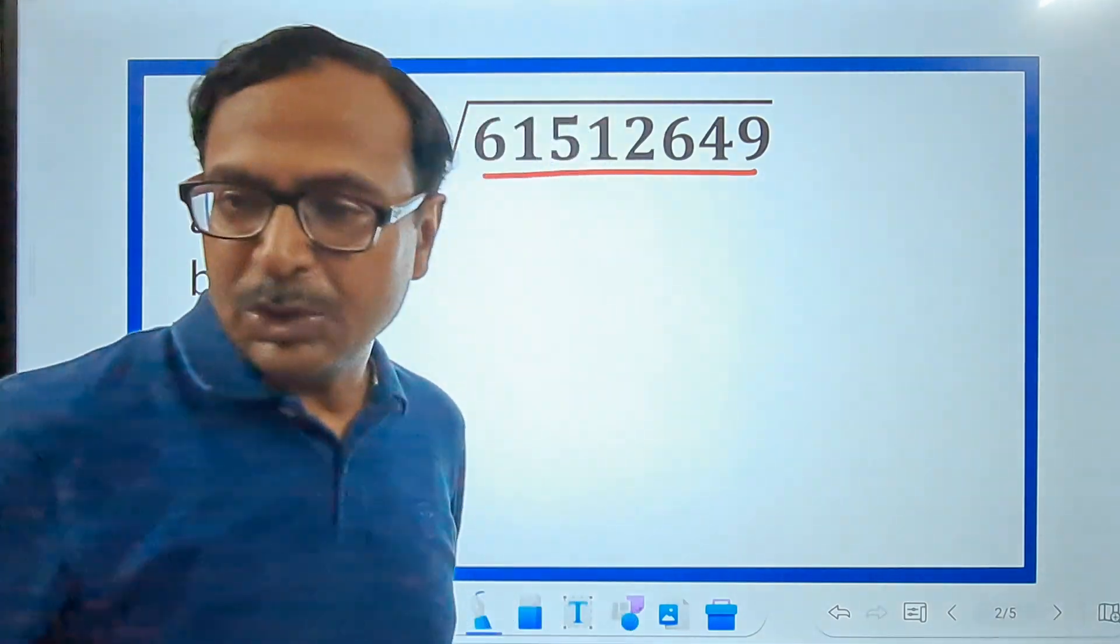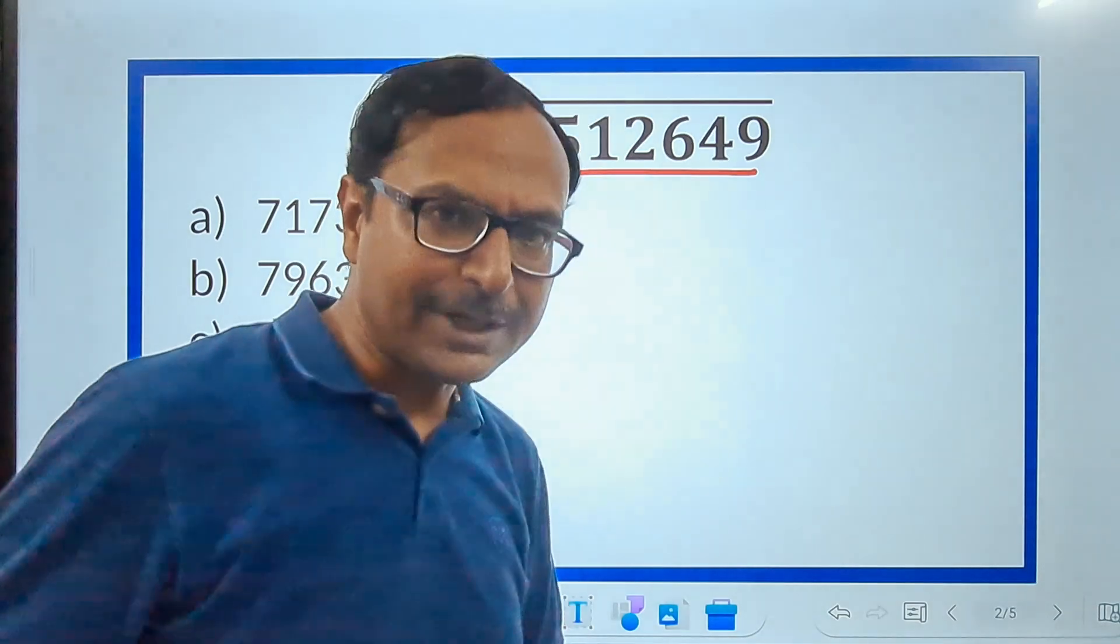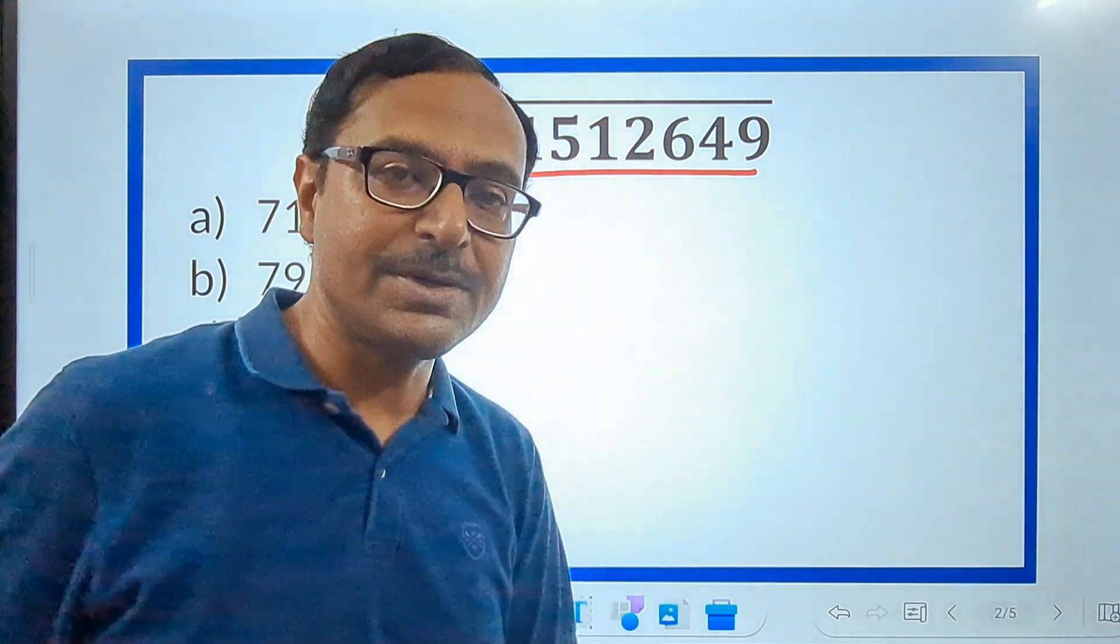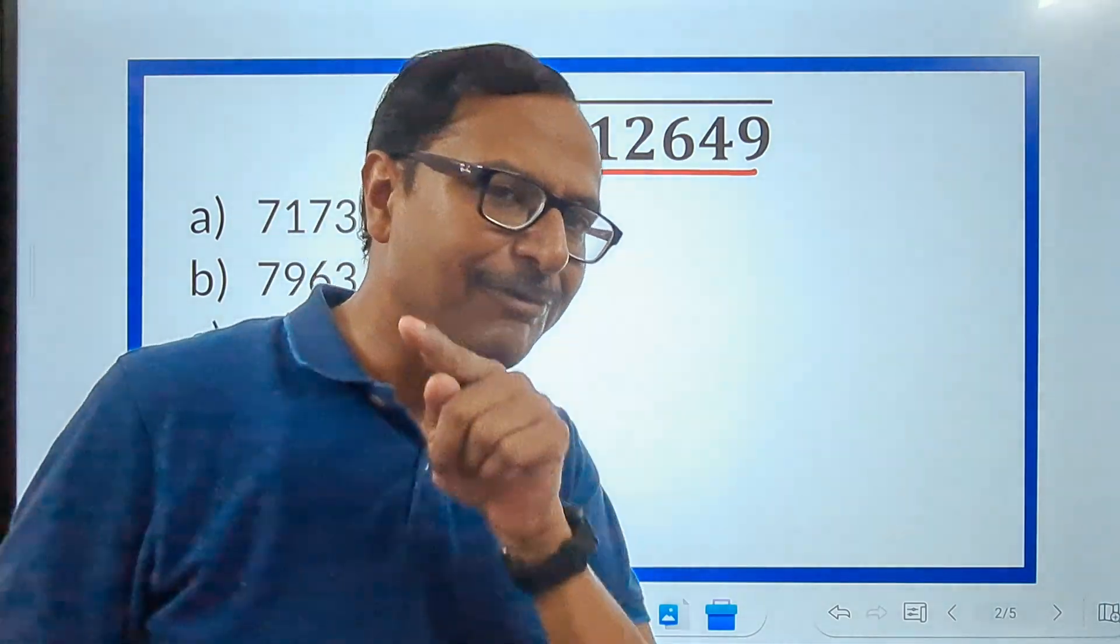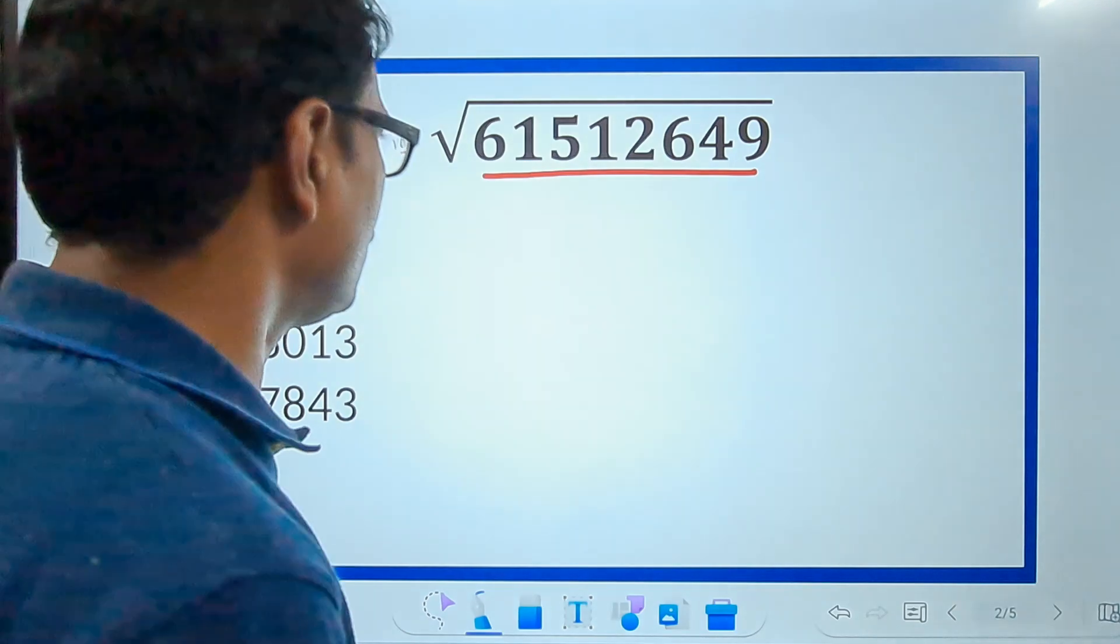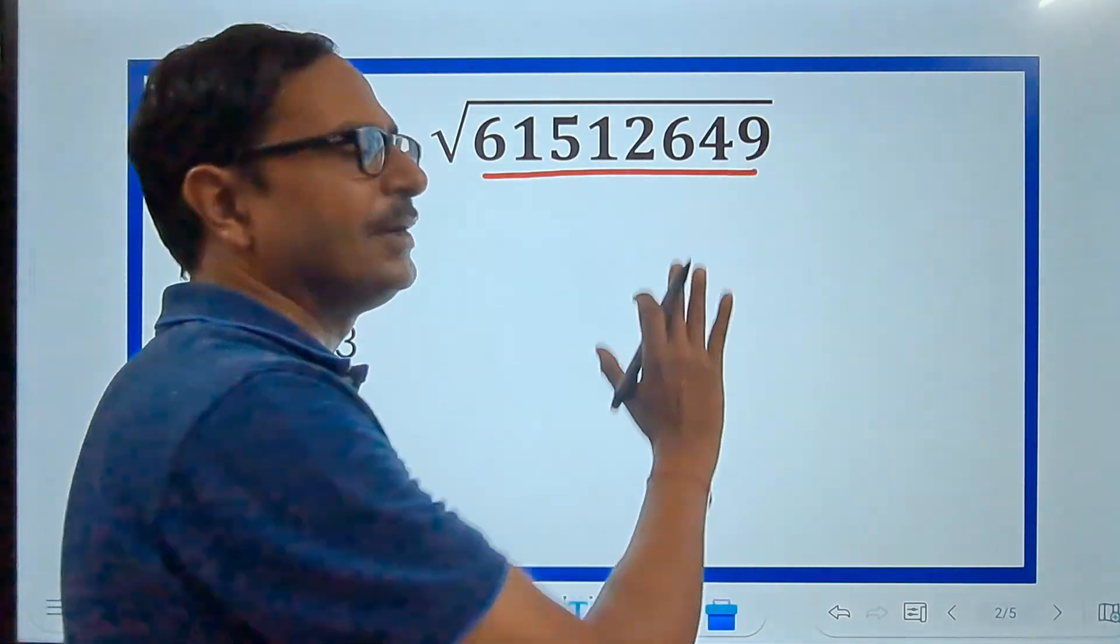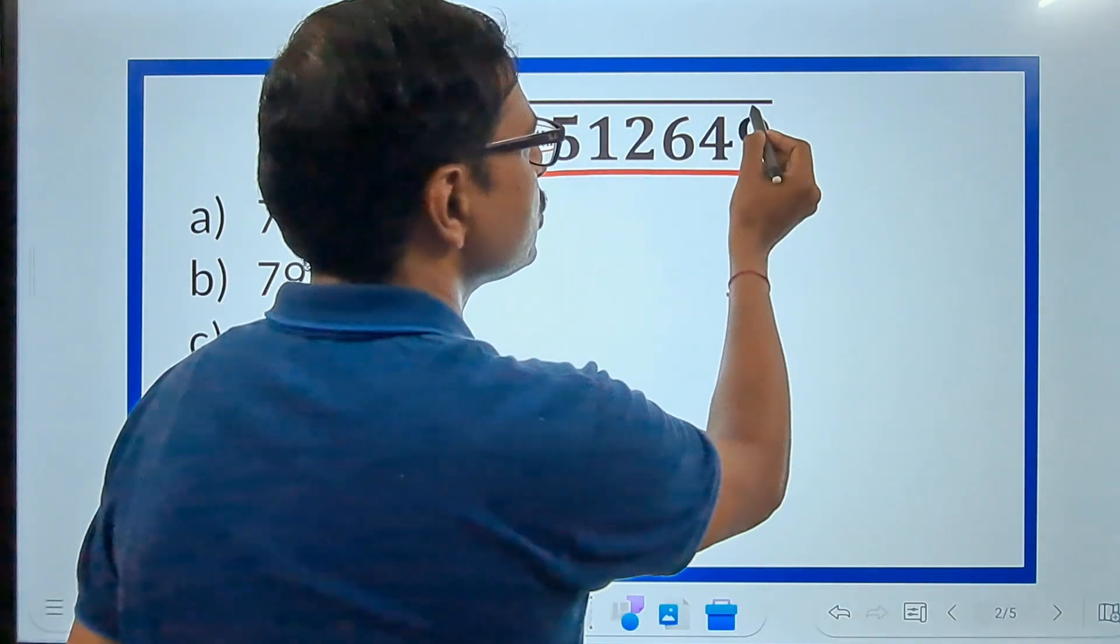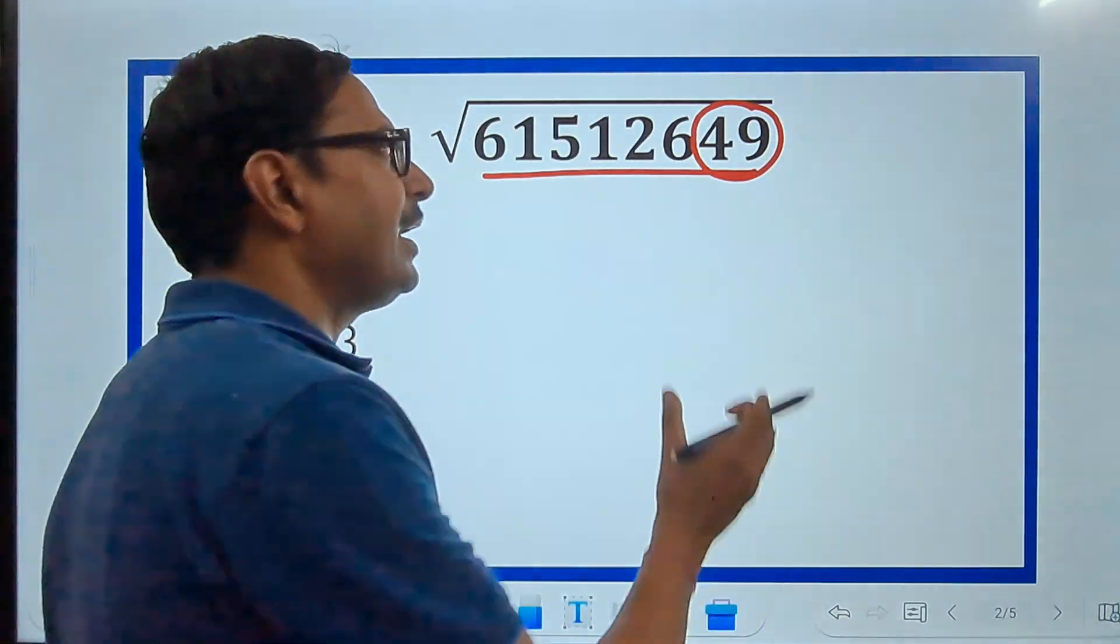Remember, the concept can be used to crack the multiple choice questions only as of now. I am working on it. How to find the square root of 8-digit and 9-digit numbers? And I am sure I will come up with that also in very near future. So, friends, just like when you have the numbers containing 4 digits or 5 digits, you see the last 2 digits, right? That's what I am going to do here also. 49.